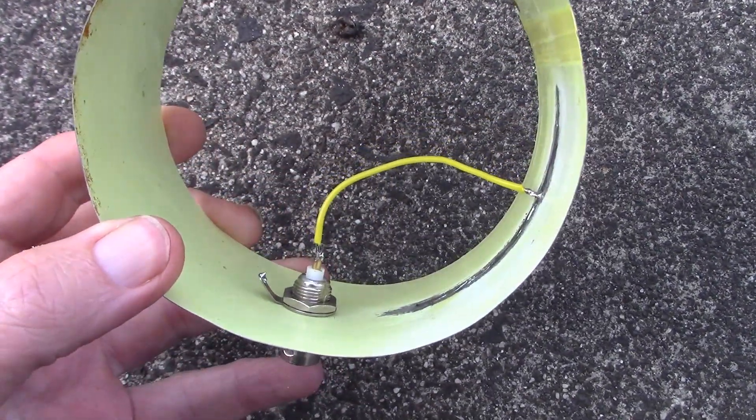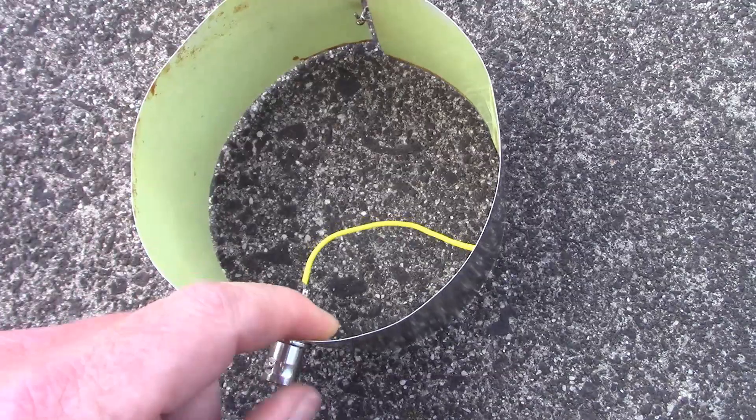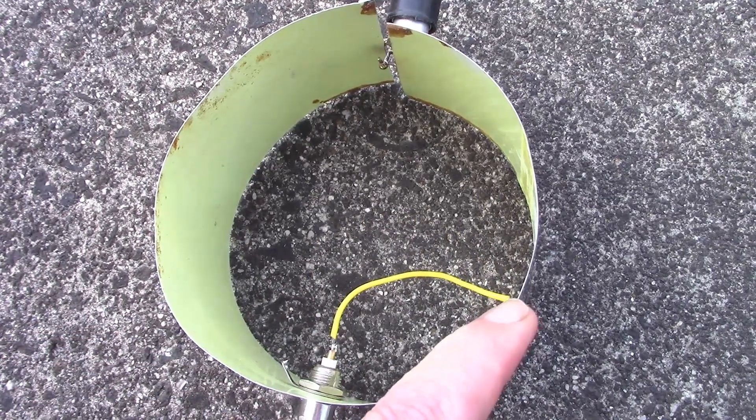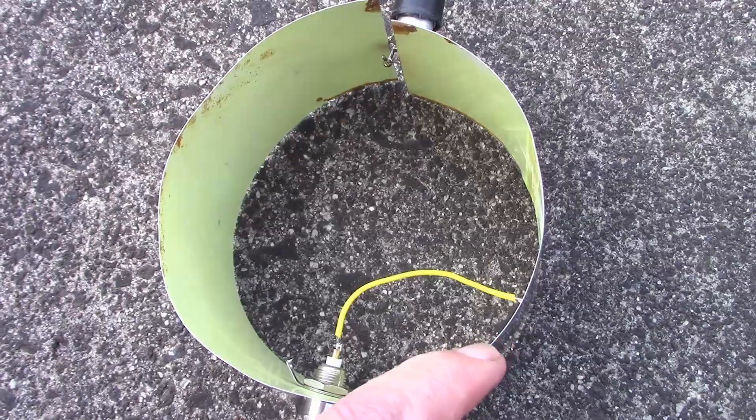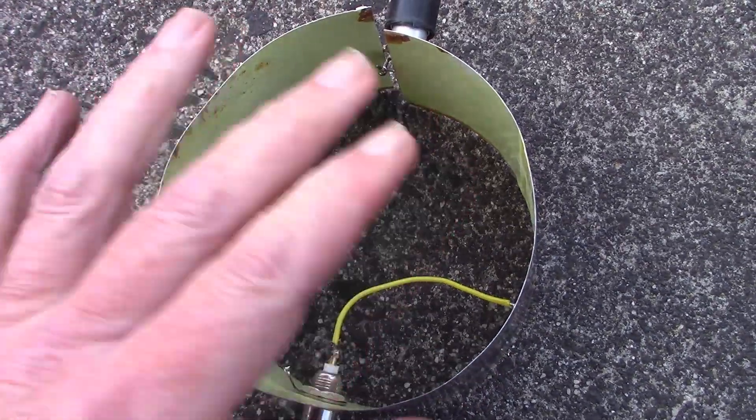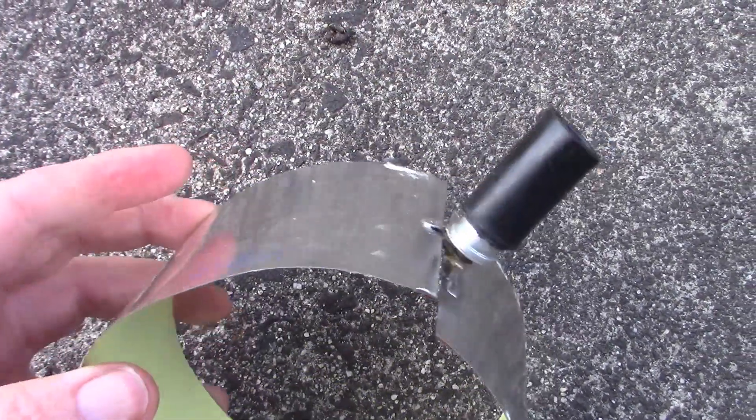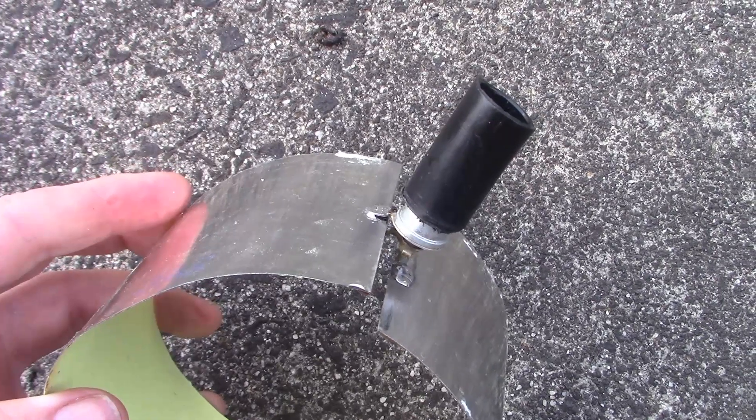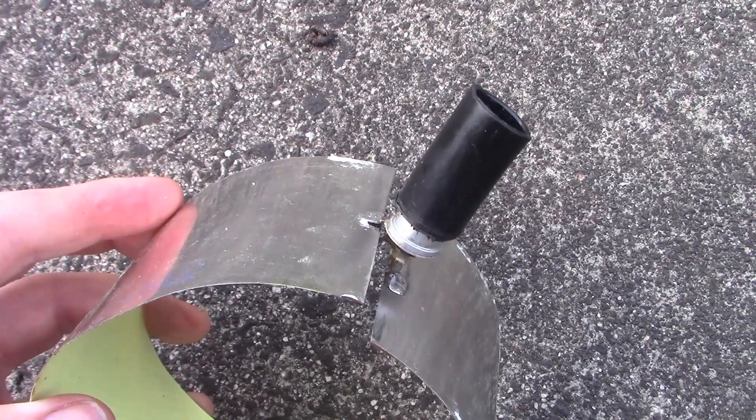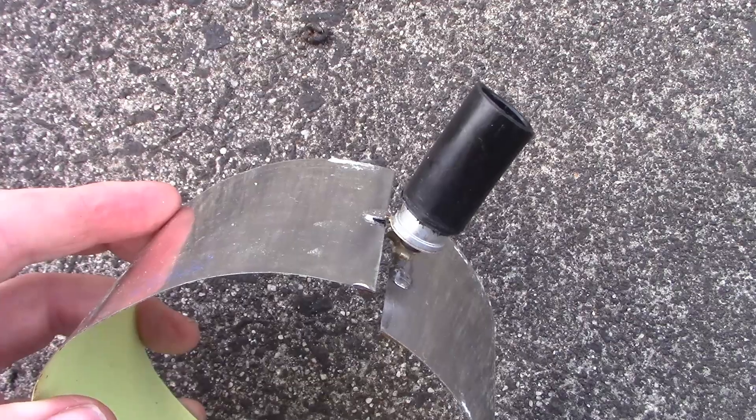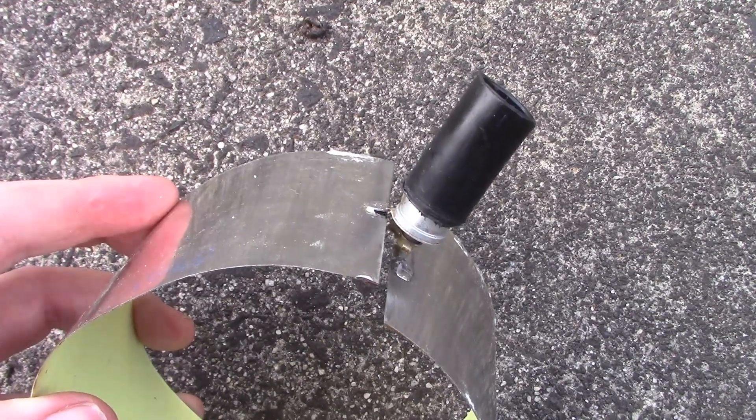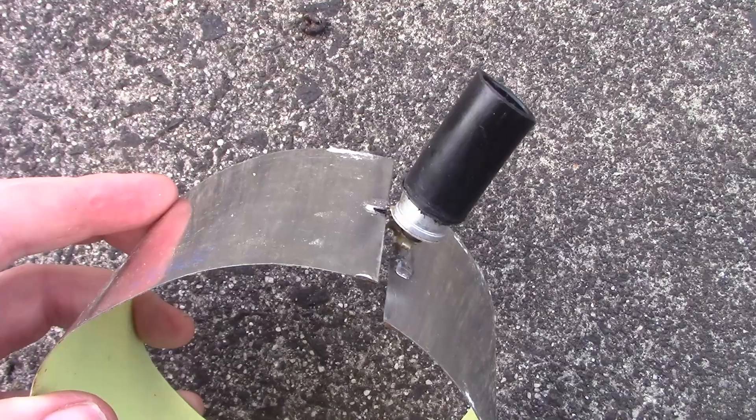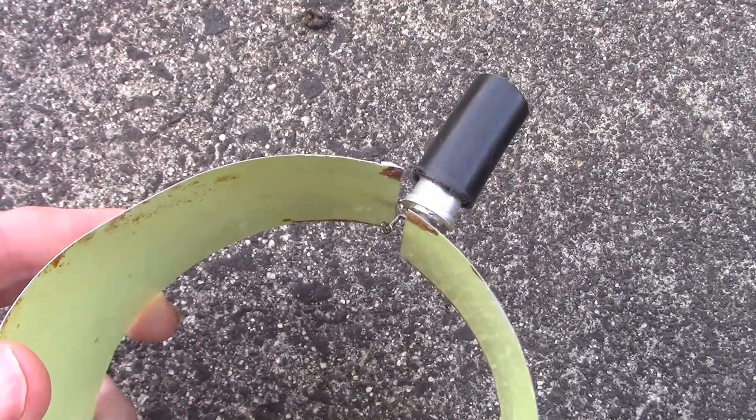I have five centimeters of wire going to about 20 to 25 percent of the total circumference. Across the ends I soldered a beehive trimmer. This might be the hardest to obtain part of the project, but it goes from five to about 25 picofarad.